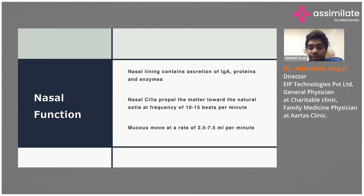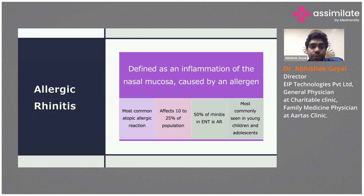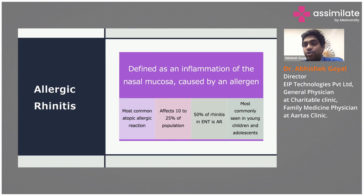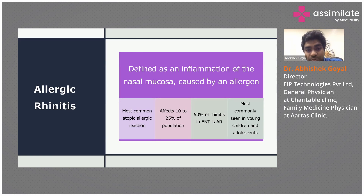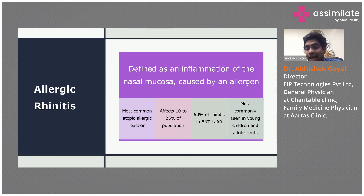Allergic rhinitis is defined as inflammation of the nasal mucosa caused by an allergen. An outside substance enters or contacts the nasal mucosa, triggering a responsive inflammatory reaction. The nasal mucosa cannot expel it; it acts as an atopic factor, causing inflammation and increased secretion.